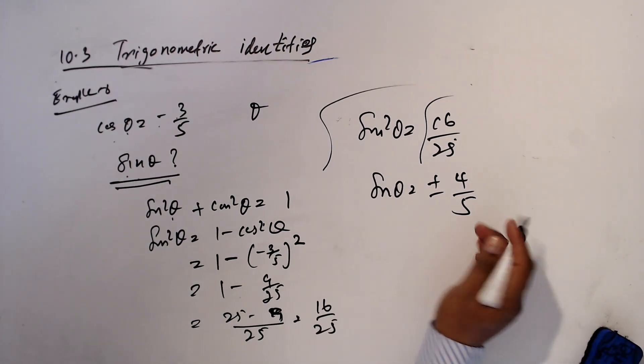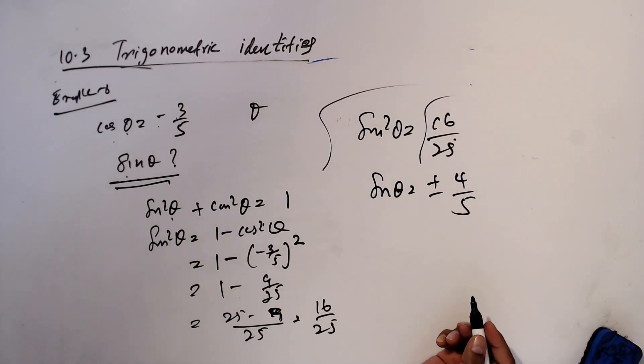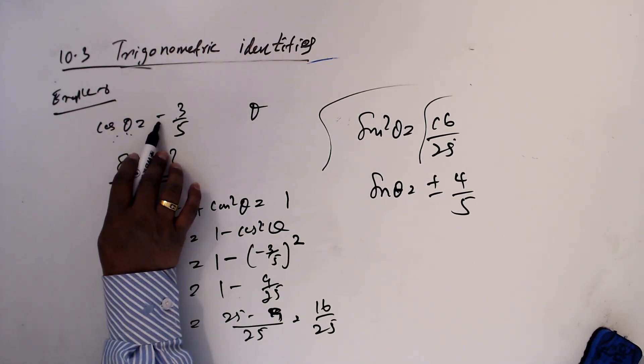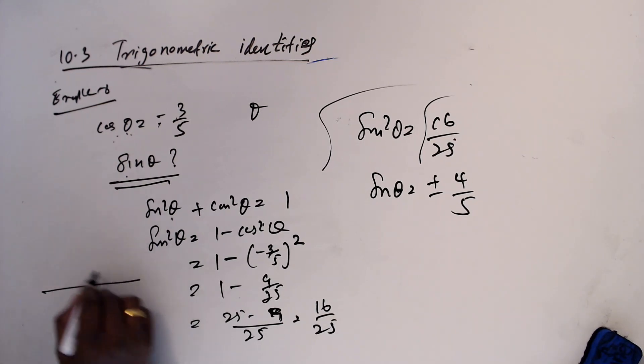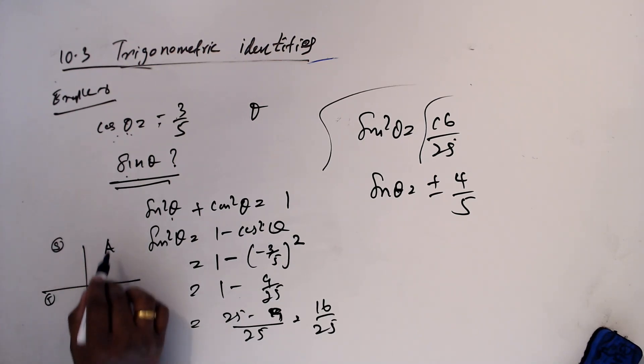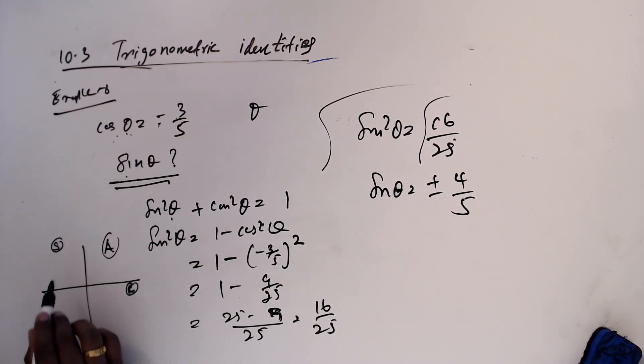Now what is our final answer? We have two answers. It depends on the theta. Now cos theta is negative. I am: all positive, only sine positive, tan positive, cos positive. Now cos value is negative. Which quadrant cos is negative? Cos is negative, here positive, here positive, either second or third.